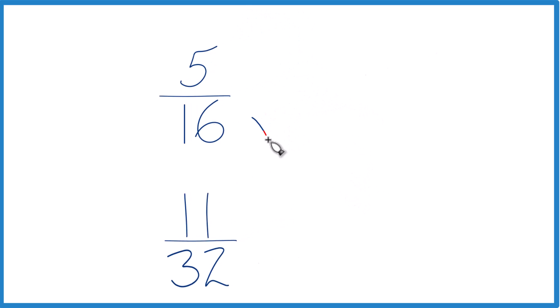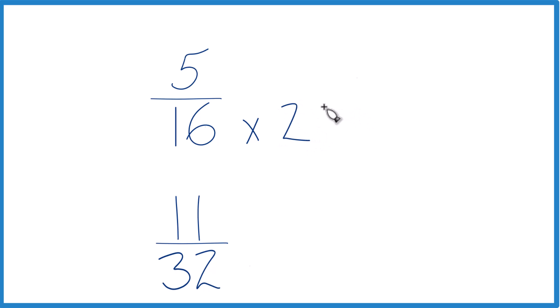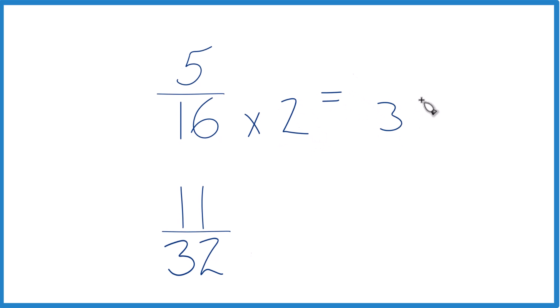So why don't we do this? If we multiply 16 times 2, that's going to give us 32. So then we'll have the same denominators. But we can't just multiply the denominator.